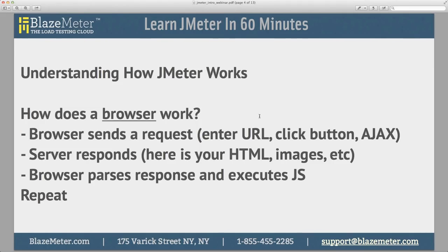Before we get into how JMeter works, let's understand how a browser works. First, a browser sends out a request — by entering a URL, clicking a button, or through an Ajax request the browser makes on its own. The server responds with HTML, images, or maybe a JSON reply. Then the browser parses the response to see what the server responded with, and possibly executes some JavaScript on the page. That's how a browser works.